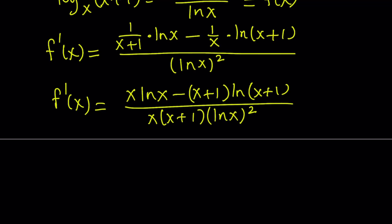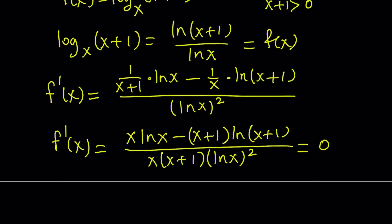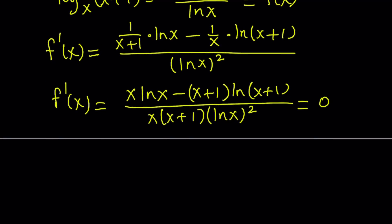We're going to find the critical points for f, so we set the derivative equal to 0 — that's what we do for finding maxima, minima, and the intervals on which f(x) is increasing or decreasing. Since x is going to be positive and different from 1, the denominator should never be 0. So if we set the numerator equal to 0, we get the following equation.